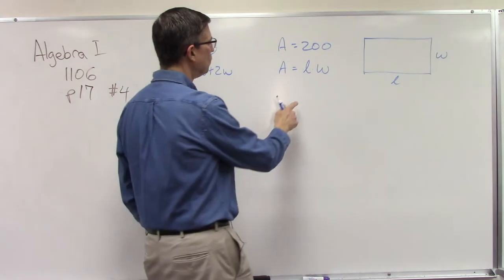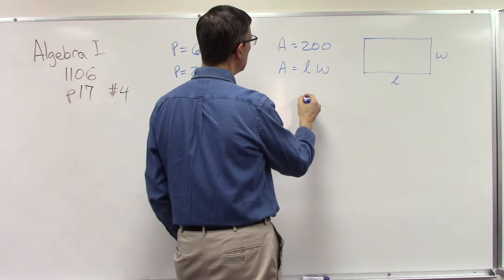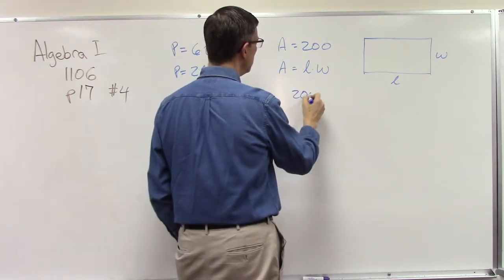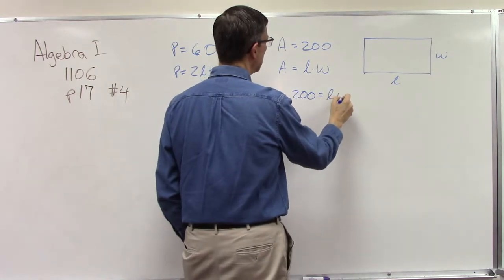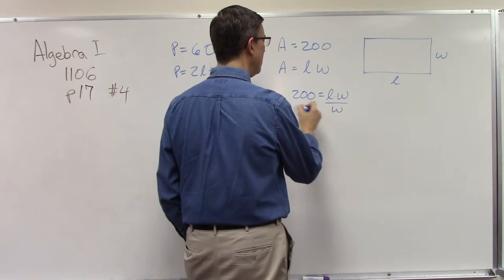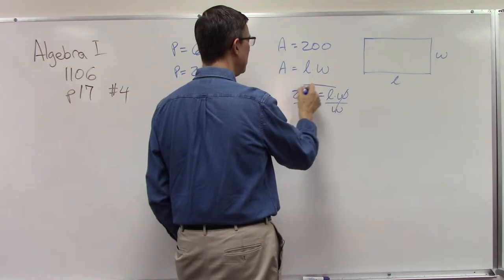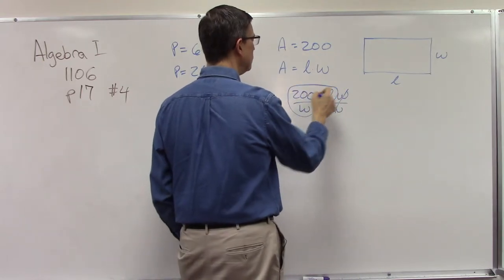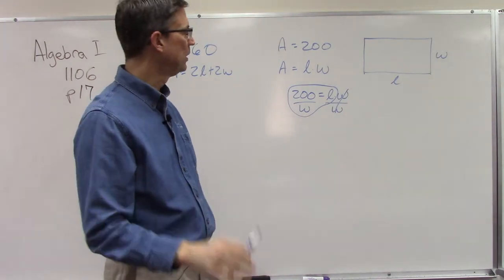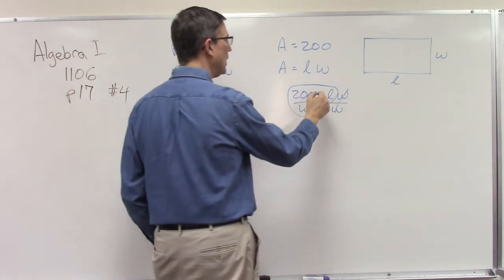Let's solve for the length. We know that the area is 200, and that's going to be equal to the length times the width. So if I divide both sides by the width, now I have an expression that says the length is 200 over w. That's just the first step. We haven't really found anything yet.